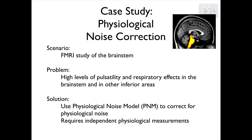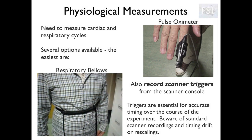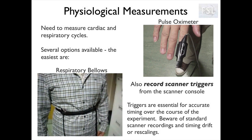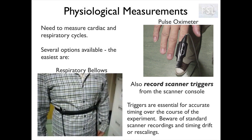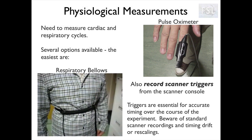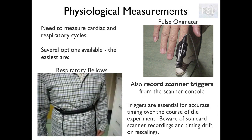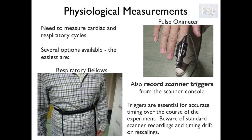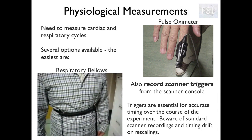We could use ICA and estimate the physiological noise from the data, but we can actually measure the cardiac and respiratory cycles directly during acquisition, and then use this information to clean the data with a tool called PNM. To do this, we would need a respiratory bellow to measure the respiratory trace and a pulse oximeter to measure the heart rate. We also need a record of the scanner triggers, because we need to know at which point of the breathing and cardiac cycles our images were acquired.